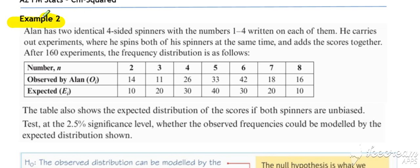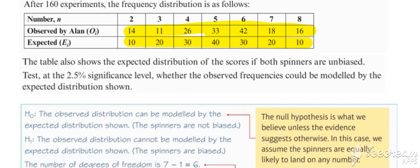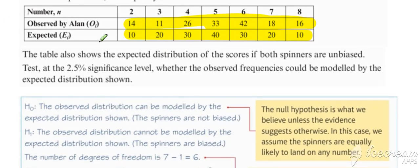So if we now consider our second example, again one we referred to earlier, we've got our observed and expected for the four-sided spinner question from previously. We're asked to test at the 2.5% significance level whether observed could be modeled by expected.